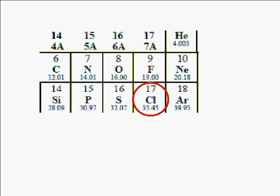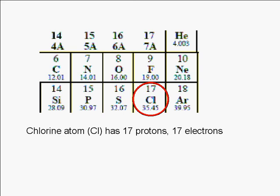Any atom with 17 protons is a chlorine atom, and any ion that has 17 protons is derived from a chlorine atom. Since an atom is neutral, it has the same number of protons and electrons. So a chlorine atom has 17 protons and 17 electrons.